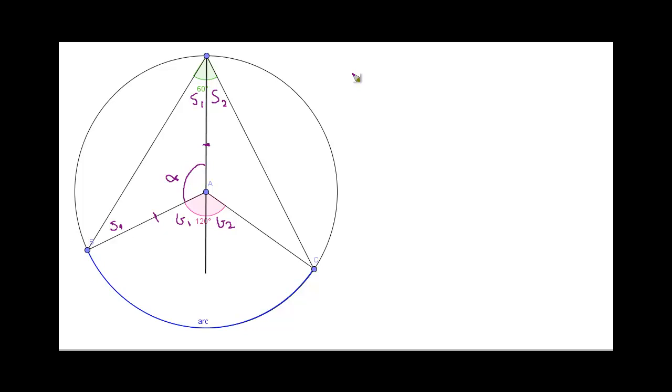So, we've figured out that 2S1 plus alpha equals 180 degrees. And remember that's because all of the angles in a triangle add up to 180 degrees.